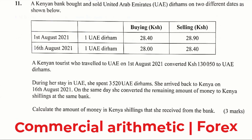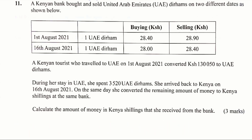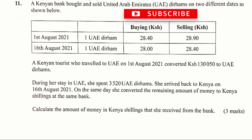Question number 11: A canyon bank bought and sold UAE dirhams on two different dates as shown. A Kenyan tourist who traveled from UAE on 1st of August 2021 converted 130,050 Kenyan shillings to UAE dirhams. During her stay in UAE she spent 3,520 UAE dirhams. She arrived back to Kenya on 16th of August 2021, and on the same day she converted the remaining amount of money to Kenyan shillings at the same bank.